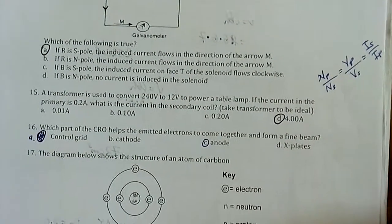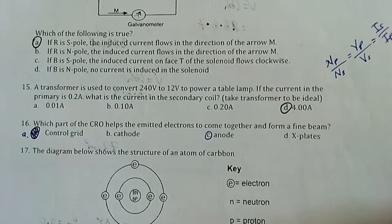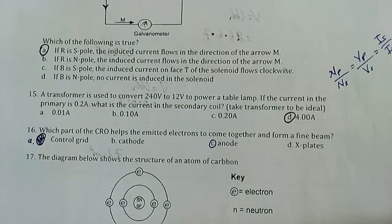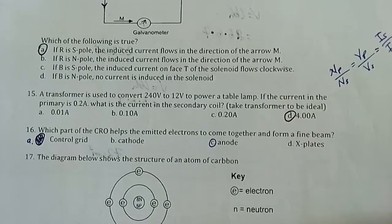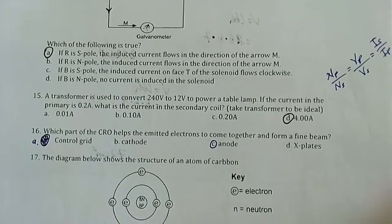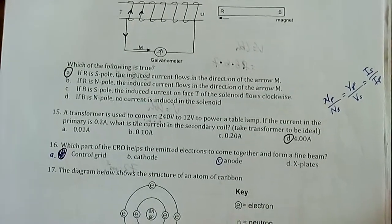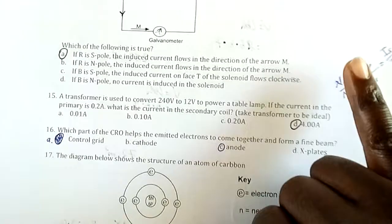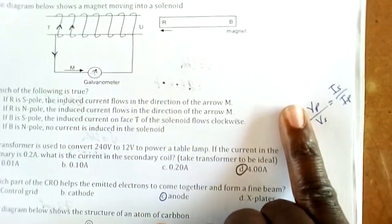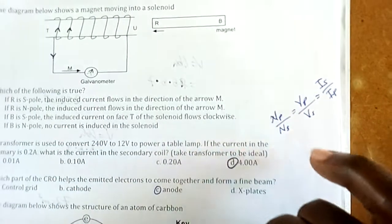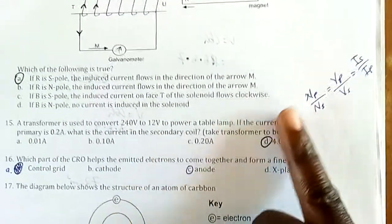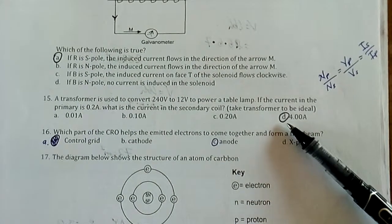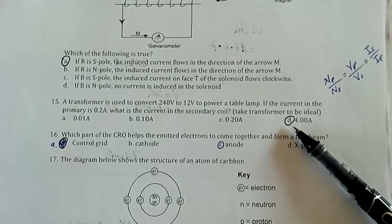Number 15: A transformer is used to convert 240 volts to 12 volts, a step-down transformer to power a table lamp. If the current in the primary is 0.2 amps, what is the current in the secondary coil? Take the transformer to be ideal, meaning 100% efficient. I use the transformer equation. I remove the coils part because what's concerned here is just voltage and current. My answer comes out as 4 amps. That's the current in the secondary coil.